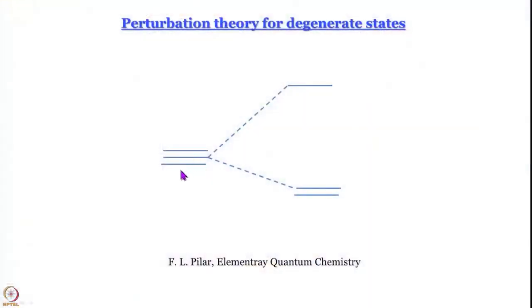We have talked about perturbation theory so far — we will recap it in a moment. Today we are going to learn about perturbation theory of degenerate states. All of us know what degenerate states are: these are states that have the same energy. Perturbation more often than not changes the energies of degenerate states with respect to each other — that is called lifting of degeneracy.